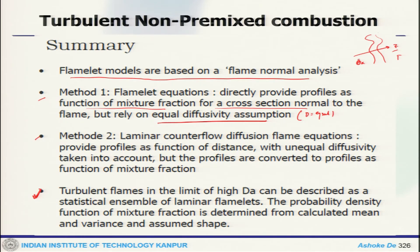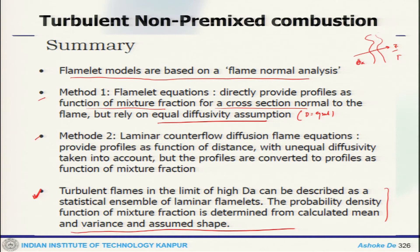Turbulent flames in the limit of high Damköhler number can be described as a statistical ensemble of laminar flamelets. The probability density function of mixture fraction is determined from the calculated mean and variance and an assumed shape. That is how you get to the laminar flamelet kind of system for the non-premixed case.